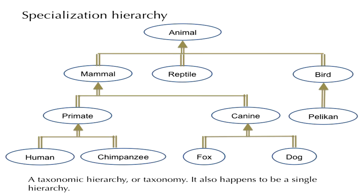Specialization is a very powerful mechanism because it allows us to produce hierarchies, and it is in fact a practice exercised since ancient times to organize human knowledge. Take the example of the zoological taxonomy, which is clearly a hierarchy. The subclass-of operation allows us to create a taxonomic hierarchy or taxonomy. In this particular case, it also happens to be what we call a single hierarchy, meaning every class can have at most one superclass, although a class can have many subclasses.